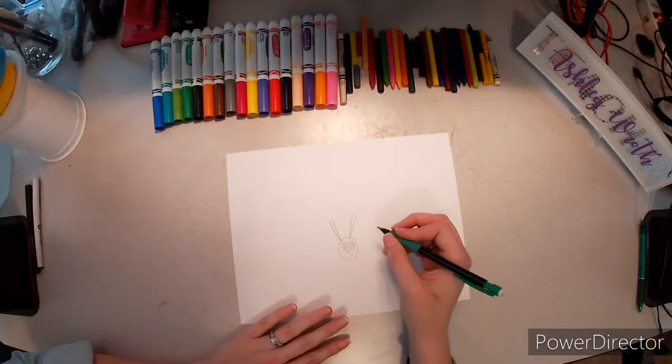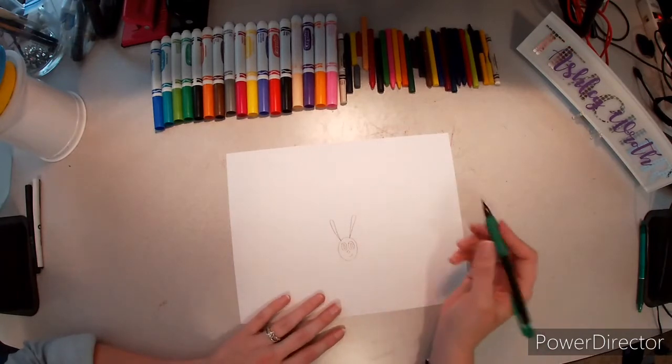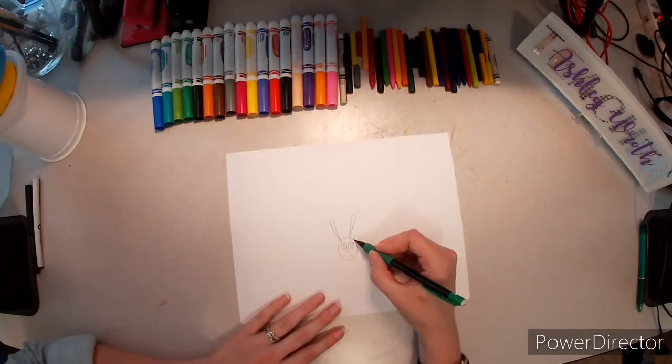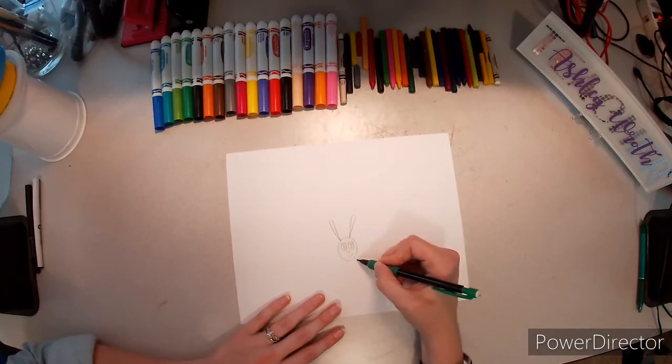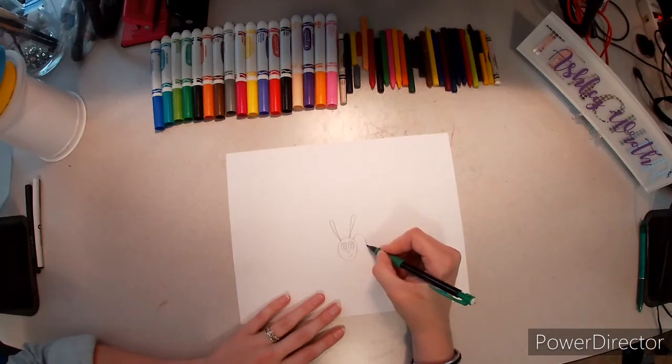For the caterpillar's body, we are going to start here and make a backward C-shape going up, around, down, and back around to touch here. Up, around, down, and back up. Backwards C.